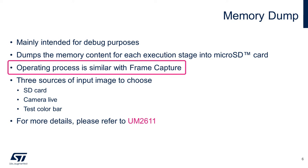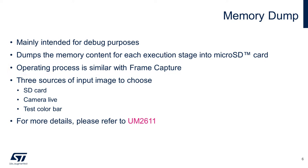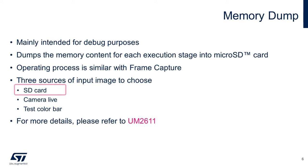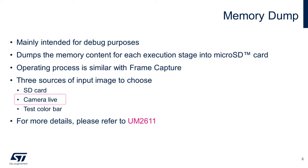The difference is, after entering this mode, you need to choose the input image source. There are three sources: SD card — the input image is coming from a BMP file stored in the micro SD card — and camera live, where the input image is coming from the camera acquisition, like we did in the frame capture mode.